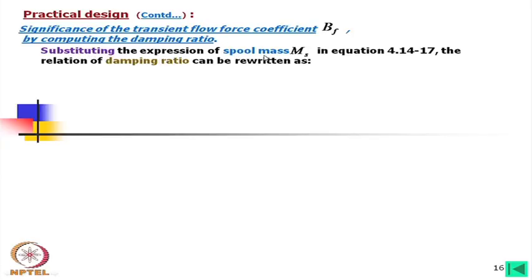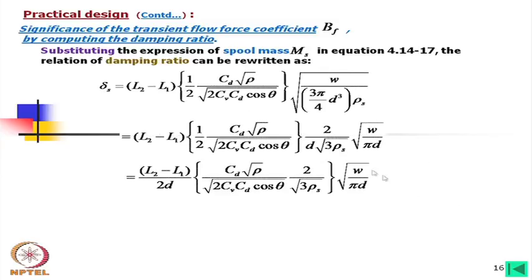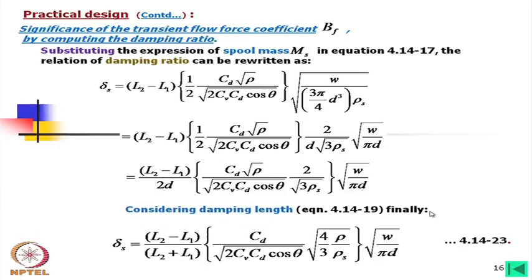Substituting the expression for spool mass Ms into equation 17, the damping ratio relation can be rewritten. Finally, delta_s = (L2 - L1) / (L2 + L1) × sqrt(rho_fluid / rho_spool) × [w / (0.3 × pi × d)]. Note that if L2 = L1, delta_s = 0, giving the ideal critical valve case which is difficult to control.